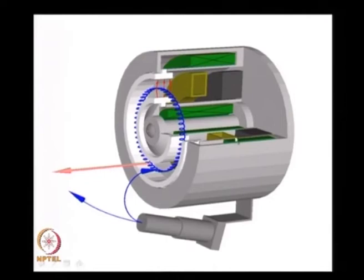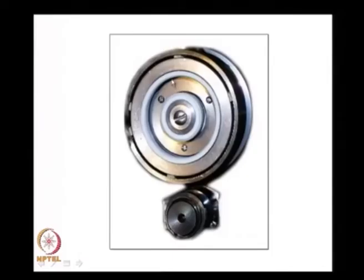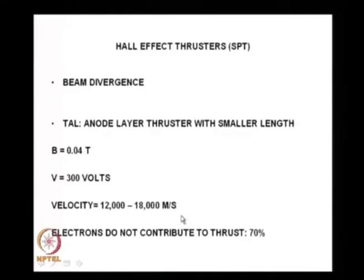Let us look at the Hall effect thruster construction. I put a magnet at the center, the annulus is between inner and outer walls, with a set of magnets providing a strong magnetic field. The Hall thruster uses a magnetic field of around 0.1 to 0.3 Tesla — compared to earth's field of about 0.4 × 10⁻⁴ Tesla, this is much stronger. Voltage is around 300 volts, and the Vj is around 15,000 m/s. Since the electrons are only spiraling and do not contribute to thrust, efficiency is around 70 percent.